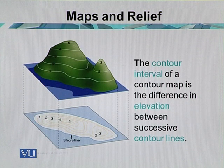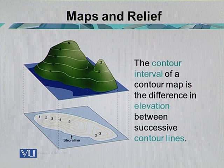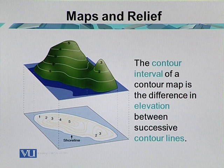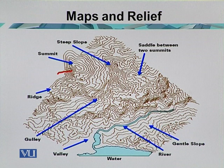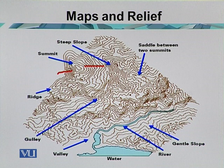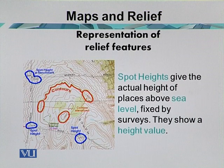The contour interval of a contour map is the difference in elevation between successive contour lines. If the difference is 10 feet, the contour interval is 10 feet; if 100 feet, the contour interval is 100 feet. A steep slope means the contours are close together — the contour interval distance is small. A gradual slope means contour lines are farther apart, so the space between contour lines indicates the slope of the area.